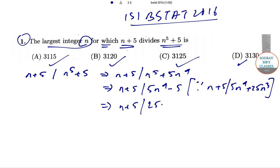This implies n+5 will divide 25n^3+5, since n+5 divides 25n^3+125n^2. This again implies that n+5 will divide 125n^2-5, since n+5 divides 125n^2+625n.